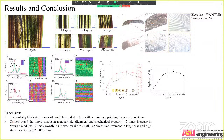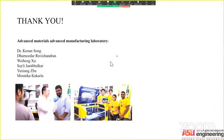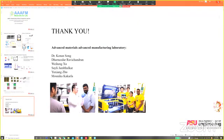In conclusion, we successfully fabricated composite multi-layered structures with a minimum printing size of 4 microns in 512 layers and demonstrated improvement in nanoparticle alignment and mechanical properties. Thank you all for listening. Thank you very much, Dr. Ravi Chandran, for the talk.